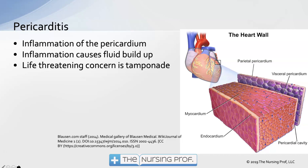We have two layers: the visceral pericardium and the parietal pericardium. The parietal pericardium is on the outside and it is not very flexible. In between those two layers is the pericardial cavity. With pericarditis, there will be inflammation in that pericardial space and fluid will start to build up. If enough fluid builds up, we can have a life-threatening concern called tamponade.